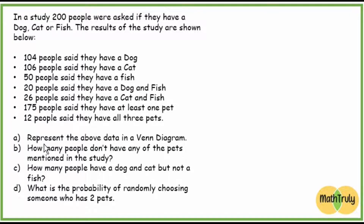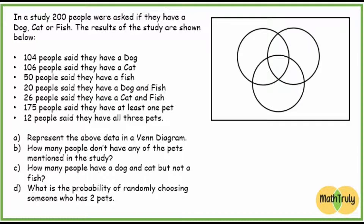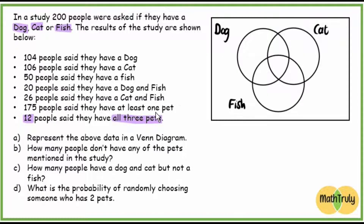Part A asks us to represent the above data in a Venn diagram. We're going to build this with three intersecting circles — dog, cat, and fish — because they told us 12 people had all three pets. When working with a Venn diagram, the best way to start is with the intersection of all three. So we put 12 in the center.